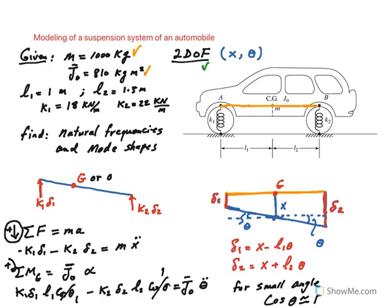The length to the front of the car from the center of gravity is given to be 1m for L1 and 1.5m for L2. Also, the front stiffness is 18,000 newtons per meter and the back spring has a stiffness of 22,000 newtons per meter. These are kilonewtons.